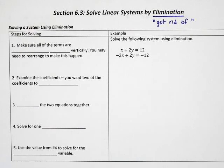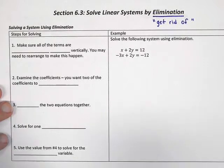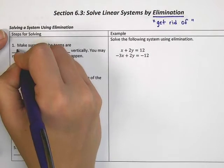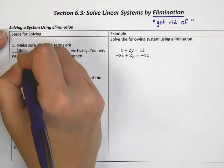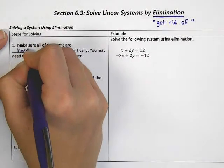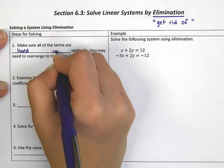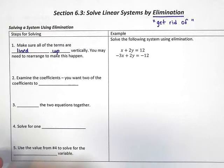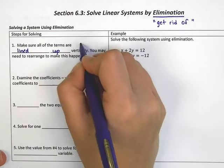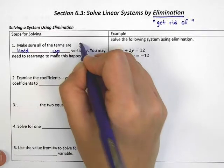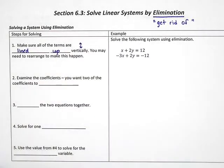There are a couple steps for using elimination. The first is to make sure all of the terms are lined up vertically. Vertically means going up and down. You may need to rearrange one or the other equation to make this happen.